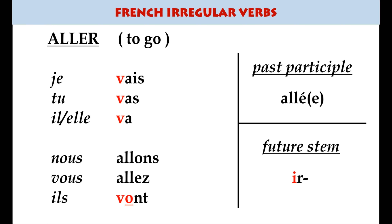Aller, to go, is very common. Some learners treat it as a normal er verb and say j'all, but it's nothing like that. It takes a v: je vais, tu vas, il va, nous allons, vous allez, ils vont. The past participle is fairly regular but takes être — watch my video on être verbs in the past tense for that. The future stem comes straight from the Latin — ir — so j'irai, tu iras, il ira, very unexpected.